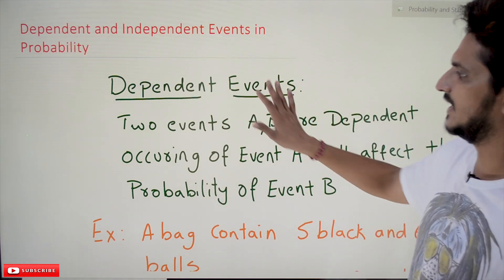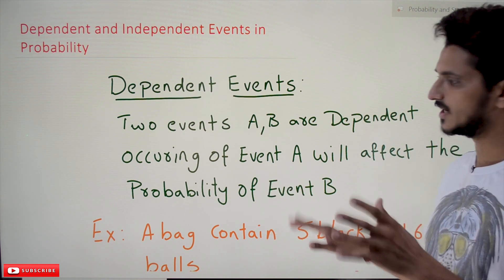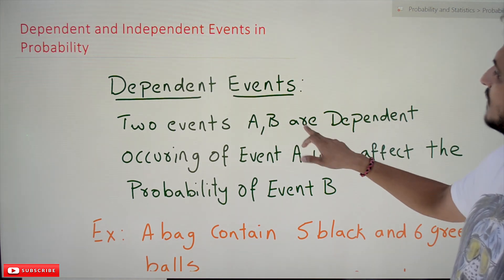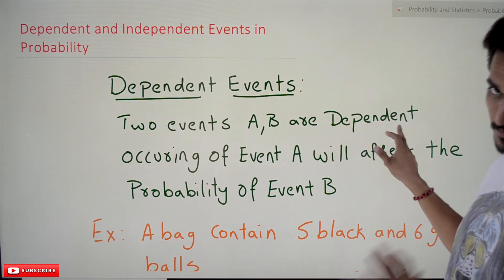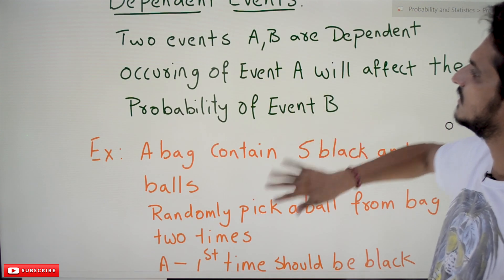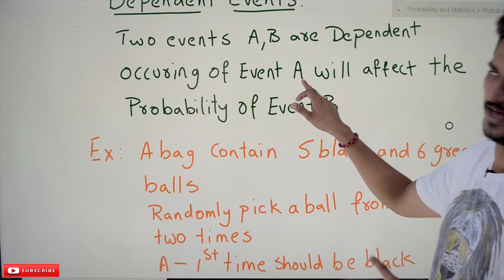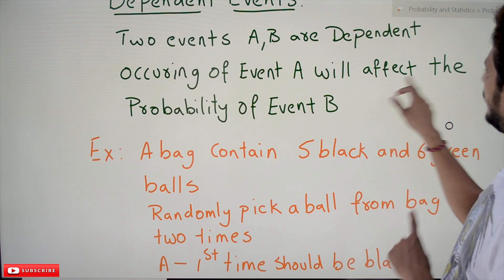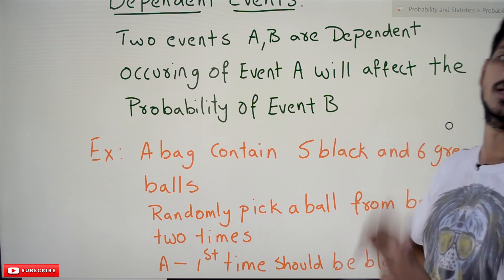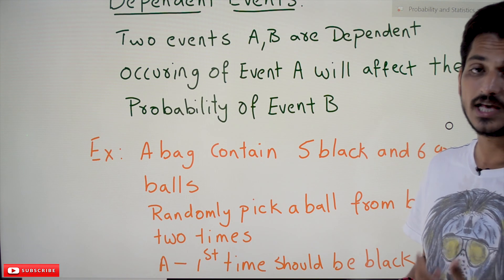Coming to today's class, first we are going to understand dependent events. We will take an example for better understanding. Two events A and B are dependent events when the occurrence of one event — event A — will affect the probability of event B. Then we can say that the two events are dependent events.